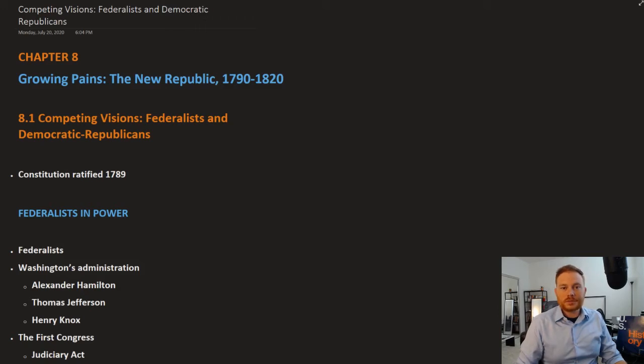All right, this is OpenStax U.S. History, Chapter 8, Growing Pains: The New Republic, 1790 to 1820. This is going to be Section 1, Competing Visions: Federalists and Democratic Republicans.